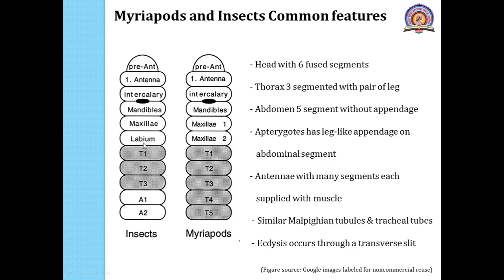Here in this diagram you can see the generalized body plan of the insect: head composed of 6 segments, then 3 thoracic segments and the remaining abdominal segments. This diagram is representing the generalized plan for the myriapods. The head of the myriapods is also made up of 6 segments, just like that of the insect head, and the remaining segments belong to the trunk segment.